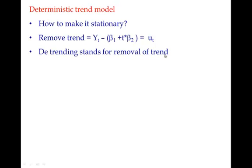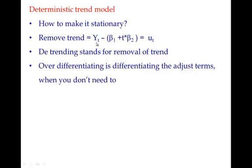Detrending means removal of the trend from the equation. When you can make the series stationary simply by removing the trend, there is absolutely no need to differentiate it by computing yt minus yt-1. If you try to differentiate in a scenario where you don't need to — where you can simply remove the trend to achieve stationarity — that is called over-differentiating. Over-differentiating is applying differencing to a series that doesn't require it; you just need to remove the trend equation.